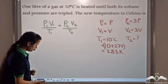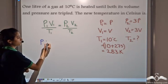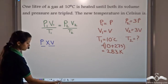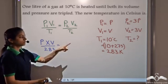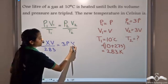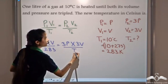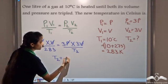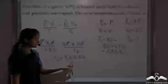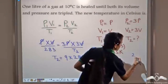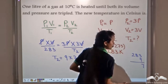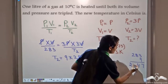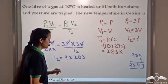Substituting into the gas equation: P times V divided by 283 equals 3P times 3V divided by T2. We can cancel P and V from both sides, giving T2 equals 9 times 283. Calculating this: 9 times 283 gives 2547 Kelvin.